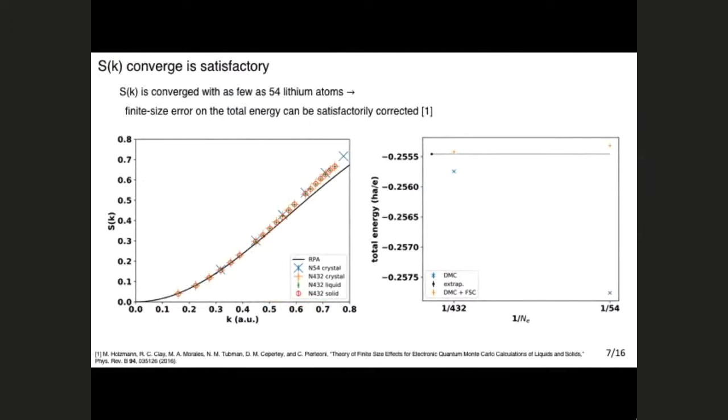One important thing to note in this extrapolation, in this finite size correction, is that they all use the static structure factor S(k). So you need to make sure your calculation of S(k) is converged well. So fortunately for our calculation, it seems to be the case that the S(k) is well converged even with just 54 electrons. So here I'm showing the S(k) as a function of k for different system sizes and different configurations of the lithium atoms. You will see that the crosses, which are the 54 electron results, agree really well with the 432 electron results. And further, all of them kind of fall onto this RPA random phase approximation result at the long wavelength limit or k going to zero limit.